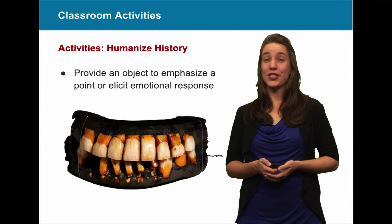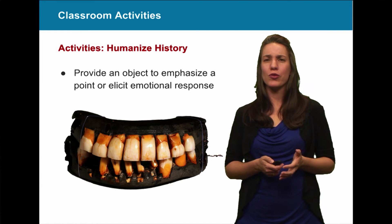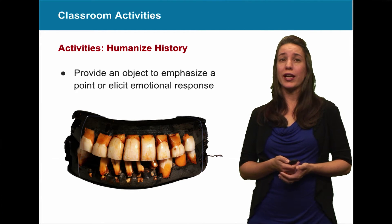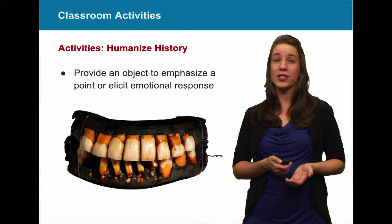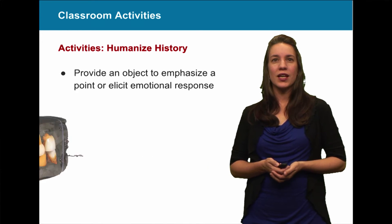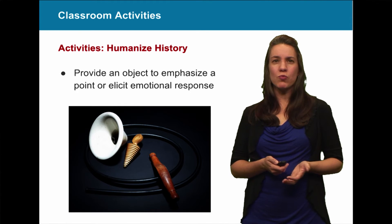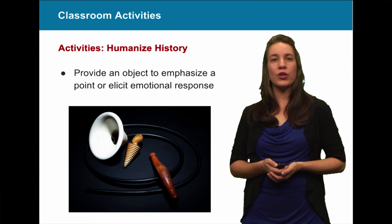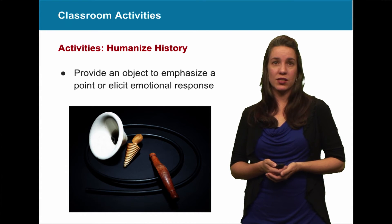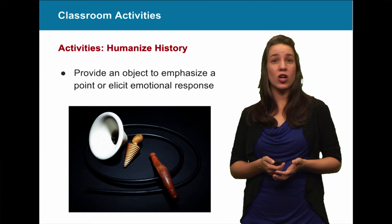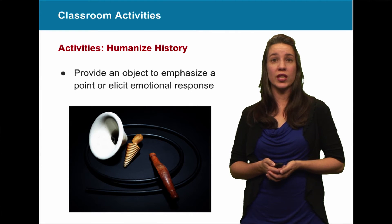You can also use objects to humanize history, emphasize a point, or get an emotional response. These are George Washington's teeth — not very comfortable looking — and you can talk to students about not just the first president, but dental hygiene and technology at the time. For more mature, older students: these are force-feeding materials used on British suffragettes who were in prison and going on hunger strikes to protest being denied the right to vote. It's a very emotional object you can use to discuss what suffragettes were willing to do to gain the right to vote.